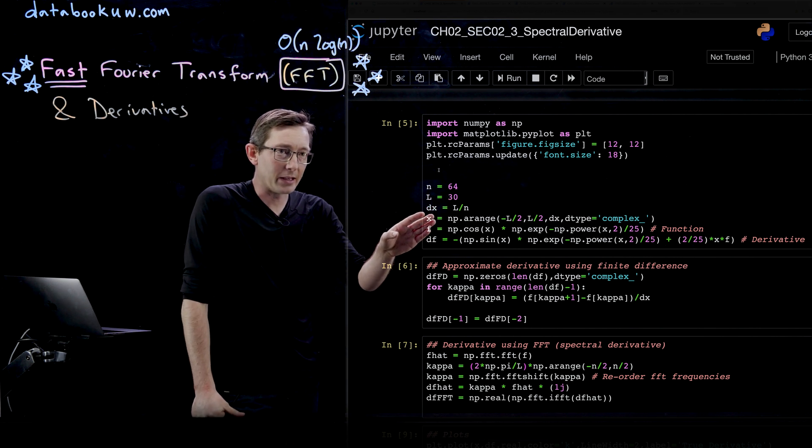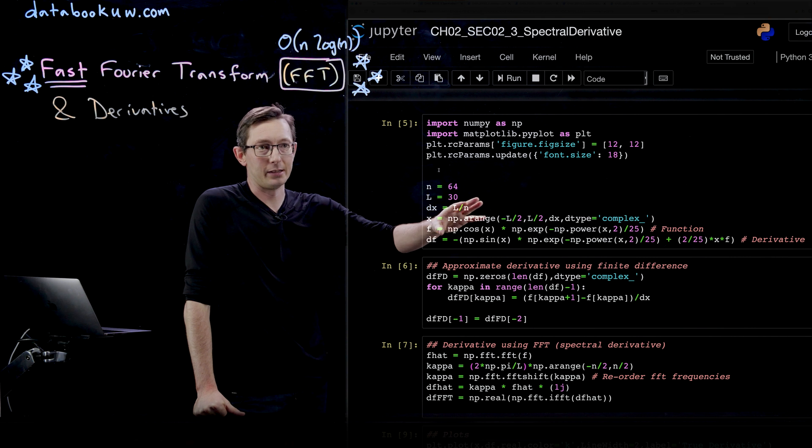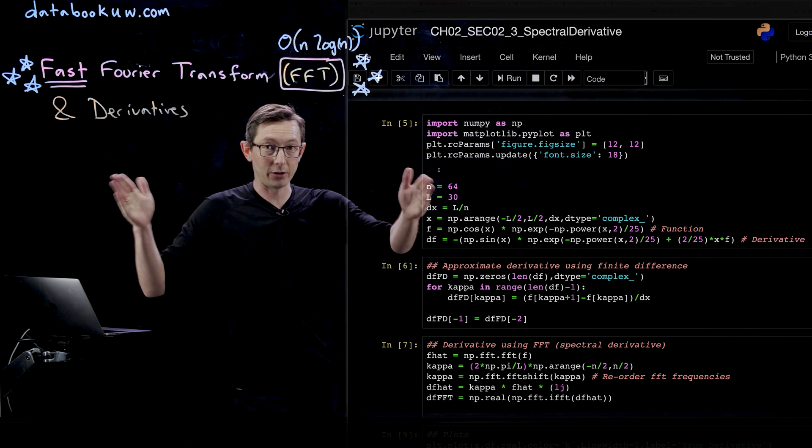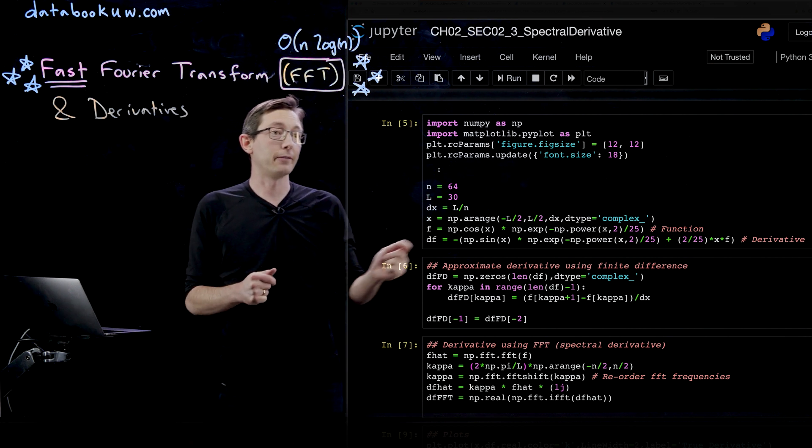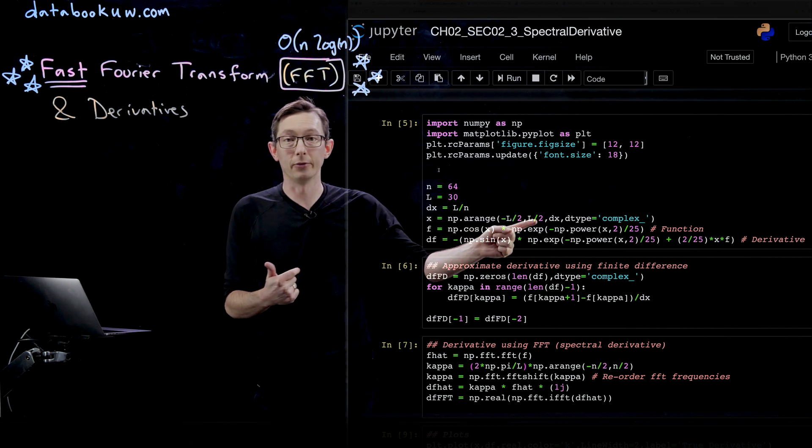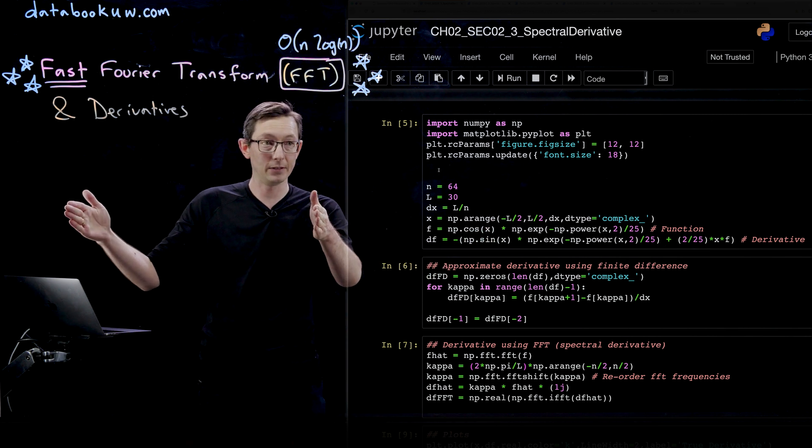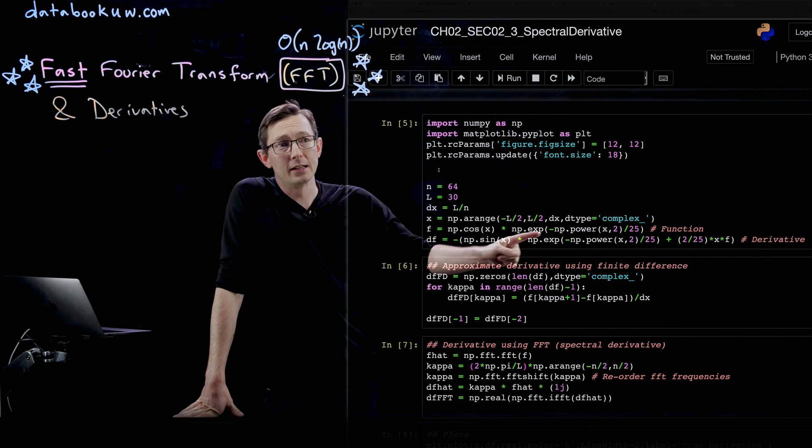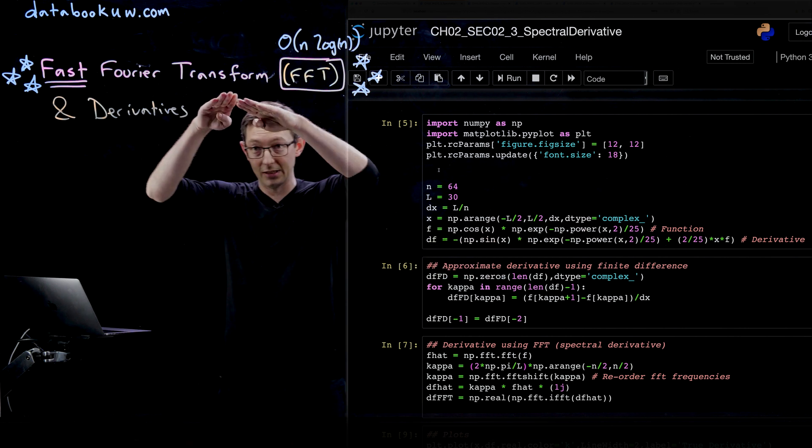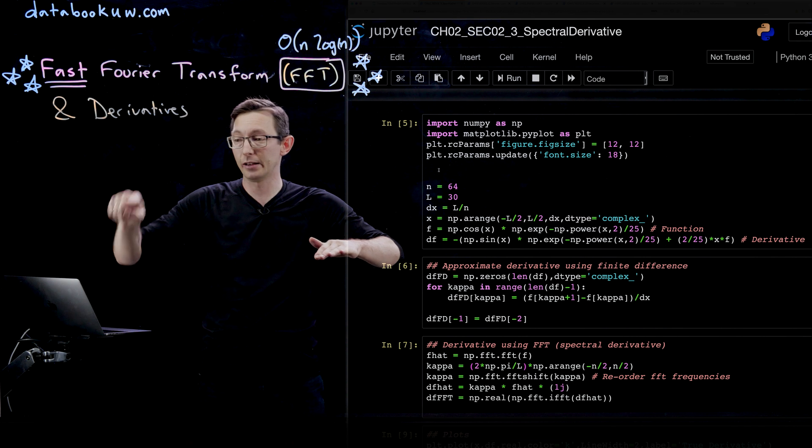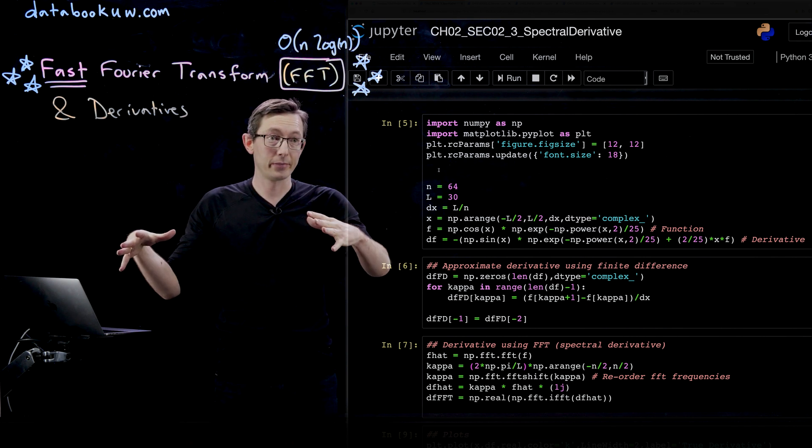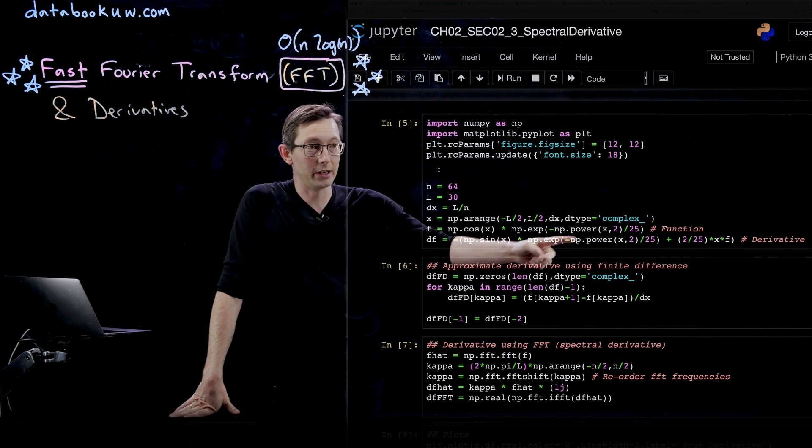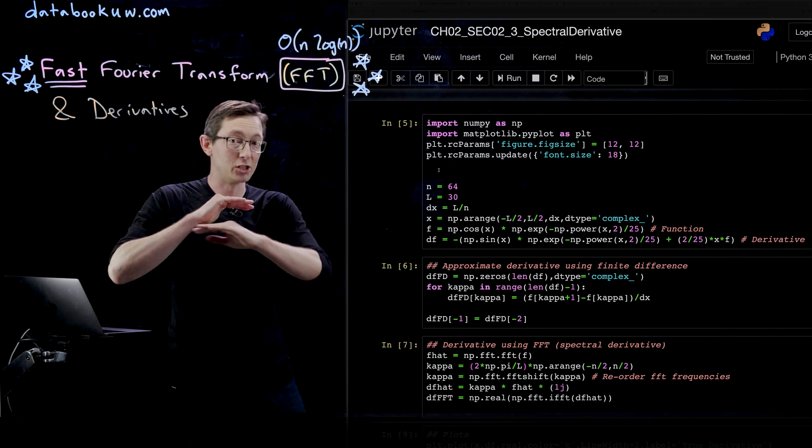In this Python code, we have some data defined on the range L. The length of our domain is 30, and we define our data from minus L over 2 to L over 2, minus 15 to 15. Our function is this cosine function times this decaying Gaussian function, basically a cosine in a Gaussian envelope. We can analytically compute the derivative df using the chain rule here. That's the perfect derivative at machine precision.